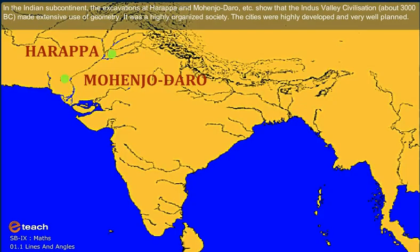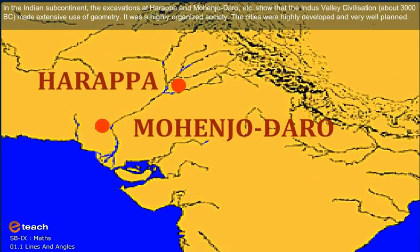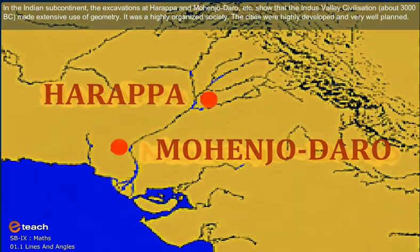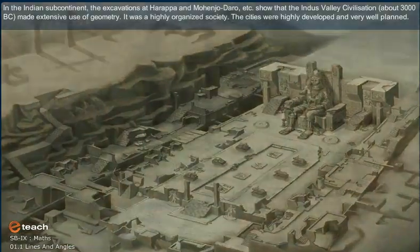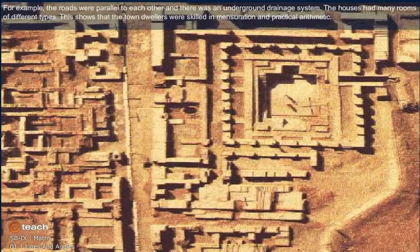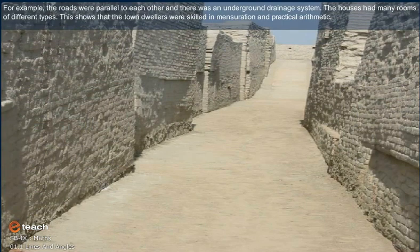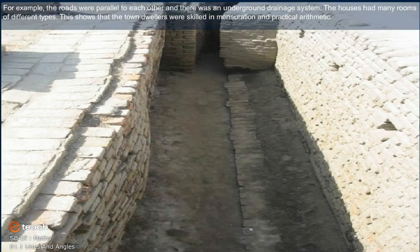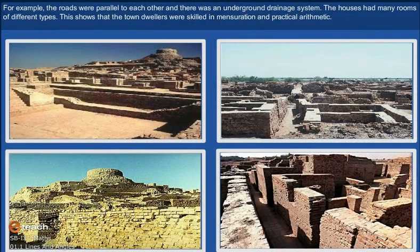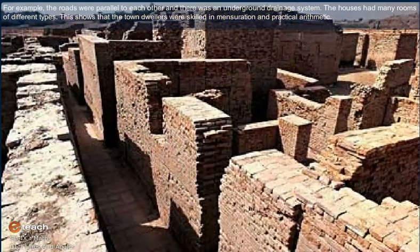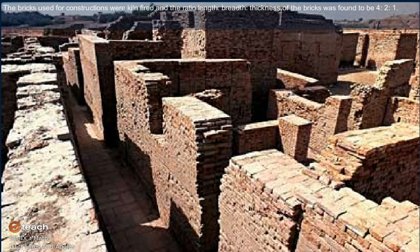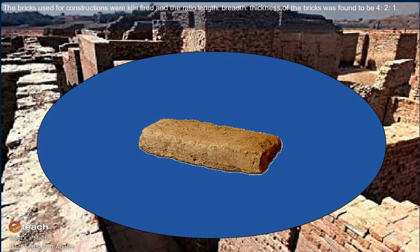In the Indian subcontinent, the excavations at Harappa and Mohenjo-daro showed that the Indus Valley Civilization, about 3000 BC, made extensive use of geometry. It was a highly organized society. The cities were highly developed and well planned. For example, the roads were parallel to each other and there was an underground drainage system. The houses had many rooms of different types, showing that the town dwellers were skilled in mensuration and practical arithmetic. The bricks used for construction were kiln-fired and the ratio of length to breadth to thickness was found to be 4:2:1.